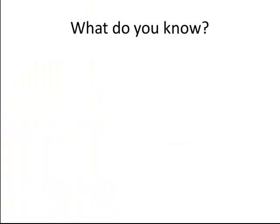So, to begin with, what do you know so far? Well, we know the accounting equation, and that's assets equal liabilities, plus shareholder's equity — if we're a corporation — or owner's equity, if we're a sole proprietorship or partnership, plus revenue, minus expense.